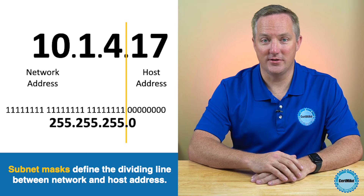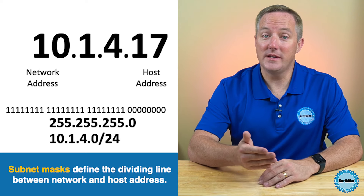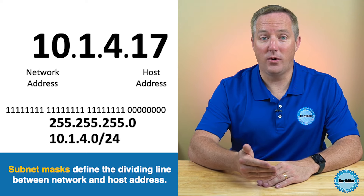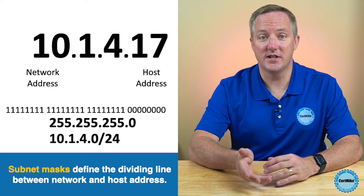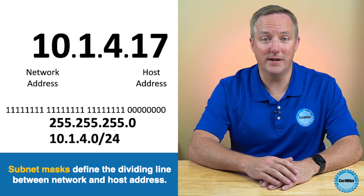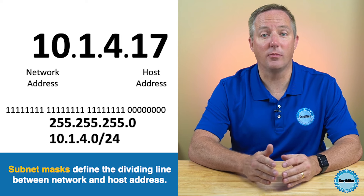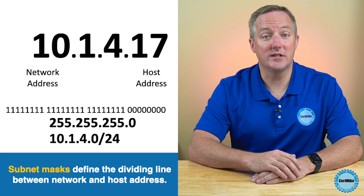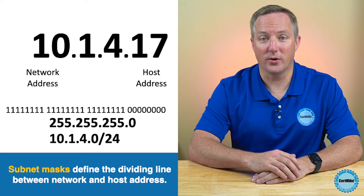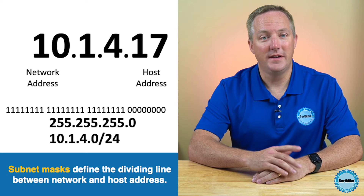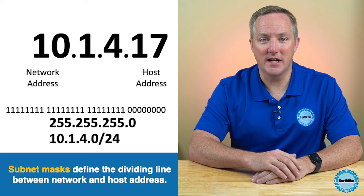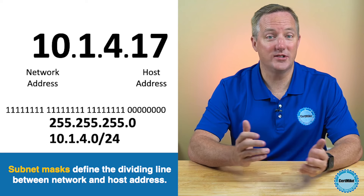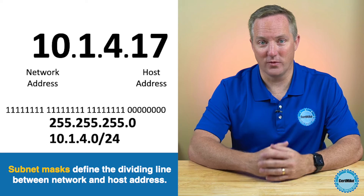Alternatively, we can simply count the number of 1s in the address and then put a slash next to the IP address with that number following it. That makes this network the 10.1.4.0/24 network. Both of these notations describe the same network — it's just different ways of writing it.